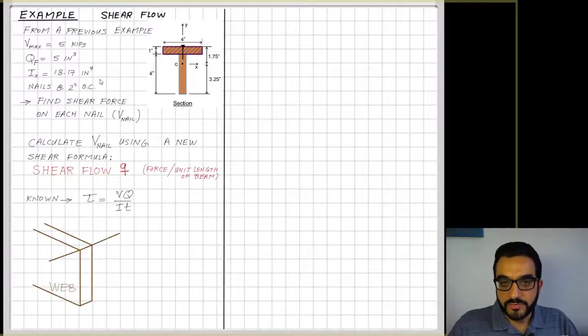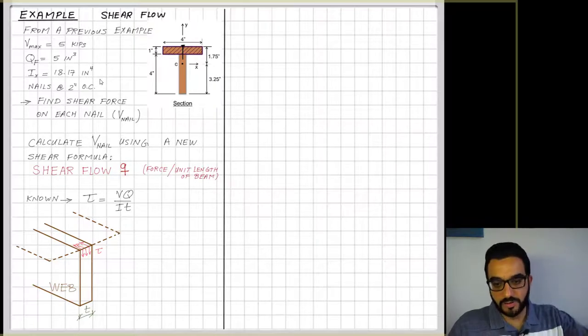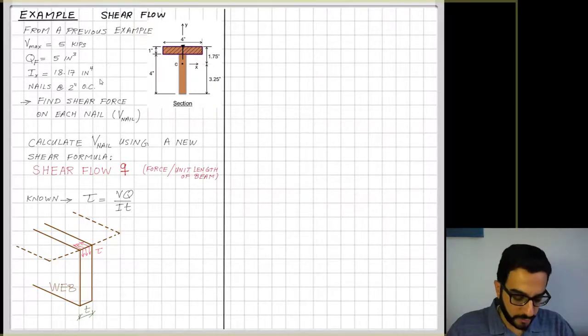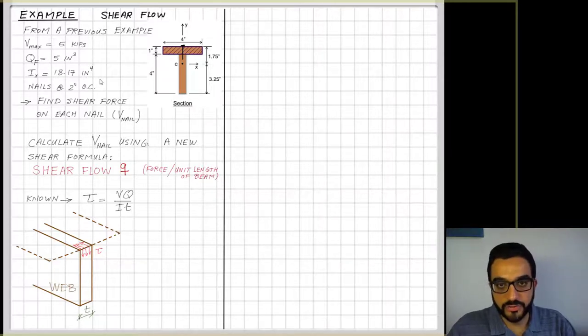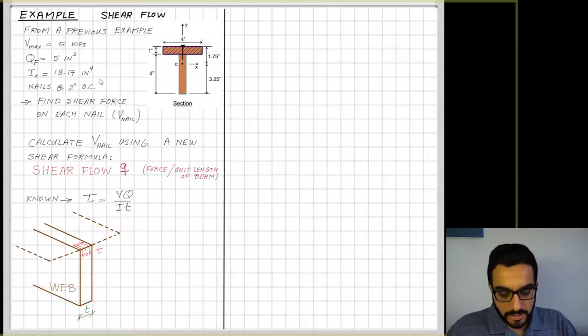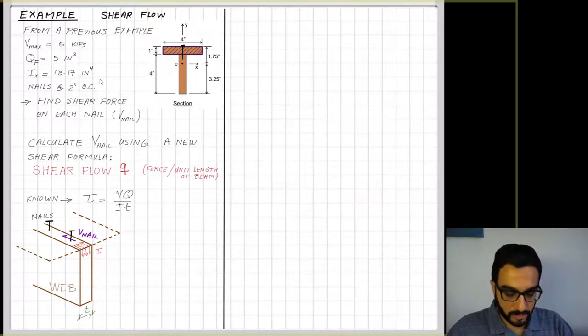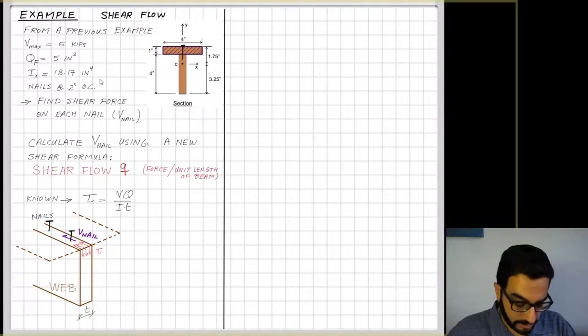We know from previous lessons that tau equals VQ over It. This is the shear stress, and we analyzed in the previous example the shear stress at the junction between the web, shown as the solid line, and the flange. We know that shear stresses are transverse, which are in the plane of the cross section, and longitudinal along the length in the direction of the beam. The nails are here, so these tau collectively try to shear off the nails, and this is what we call combining force together to form that V_nail, the shearing force in each nail.